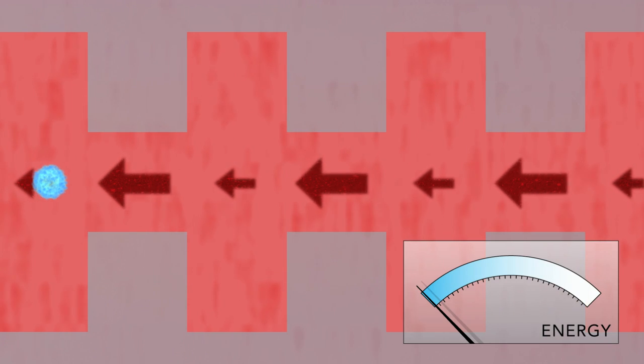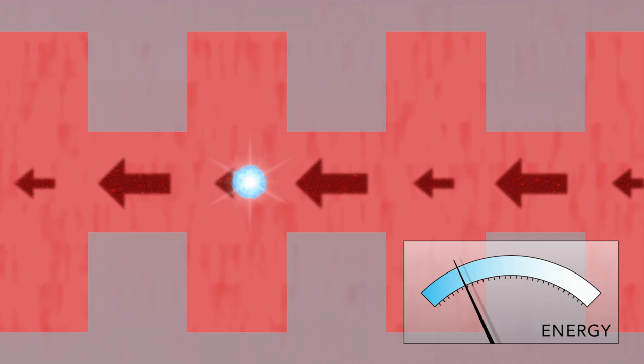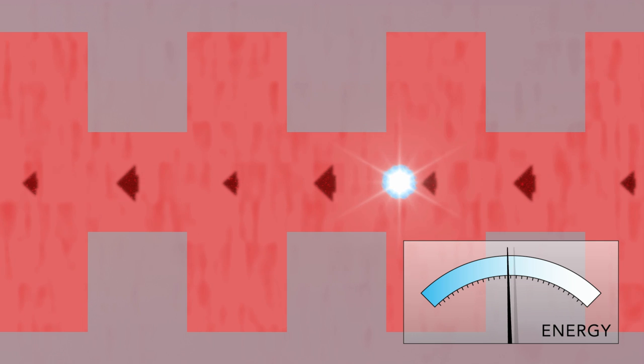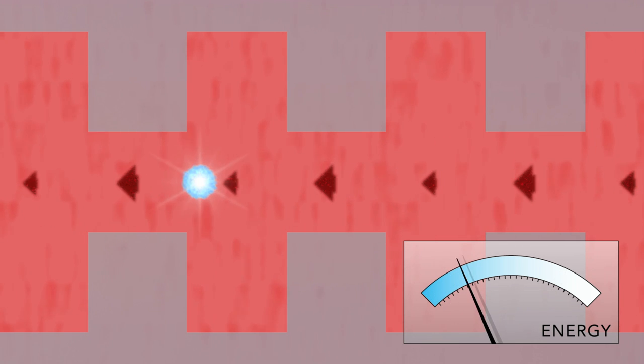Electrons traveling through the patterned channel now receive a big energy boost from the electric fields between the ridges and lose only a little energy as they pass through the smaller gap fields. The net result is a significant energy gain for those electrons that are perfectly timed with the laser light waves.